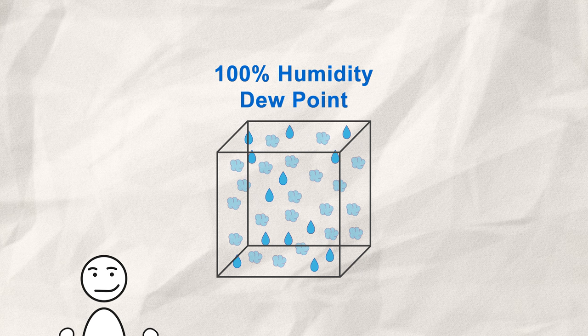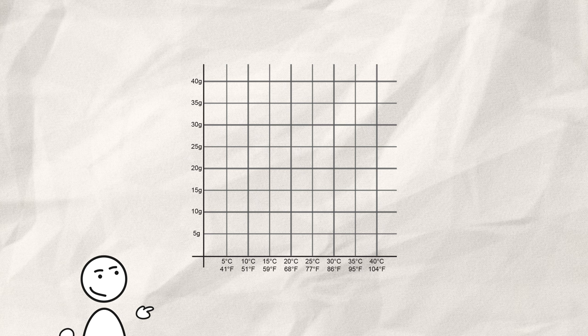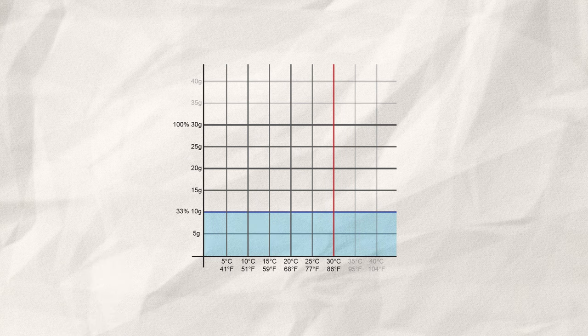But how can we reach such high levels of humidity? Remember, relative humidity is linked to the air temperature. If we take for example air at 30°C with relative humidity of 33% and cool it down to 10°C, the humidity will rise to 100%.